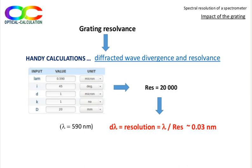Therefore, the smallest resolvable wavelength variation is 590 nm divided by 20,000, which is around 0.03 nm. It is 10 times smaller than the targeted spectral resolution, so the grating is suitable for the present application.